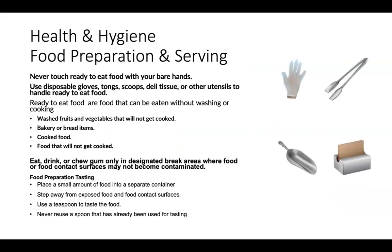Food preparation and serving. We are not allowed to touch ready-to-eat foods with our bare hands. We use disposable gloves, tongs, scoops, deli tissue, or other utensils to handle ready-to-eat food. Ready-to-eat foods are foods that can be eaten without washing or cooking — examples are washed fruit and vegetables that will not get cooked, bakery or bread items, cooked food, or food that will not get cooked. Take care not to contaminate areas by eating in food preparation areas. Eat, drink, or chew gum only in designated break areas where food or food contact surfaces may not become contaminated.